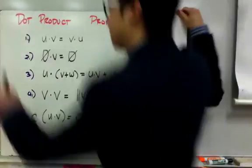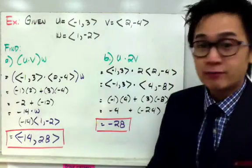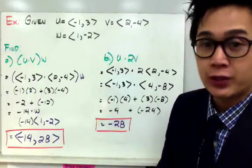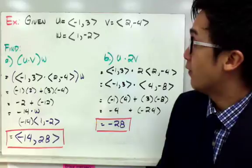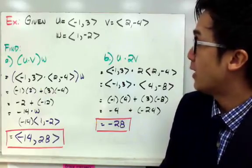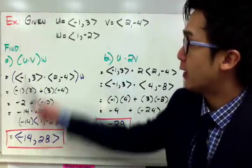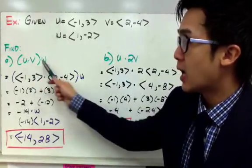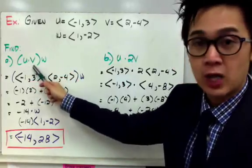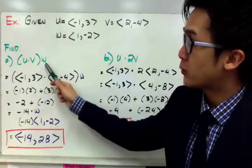Let's have some examples. We have vectors u = ⟨-1,3⟩, v = ⟨2,-4⟩, and w = ⟨1,-2⟩. To find (u·v)w, all we have to do is perform the dot product first, and after we've found our answer, we're going to multiply it with w.